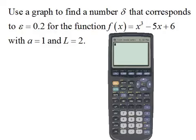Use a graph to find a number delta that corresponds to epsilon equals 0.2 for the function f of x equals x cubed minus 5x plus 6 with a equal 1 and L equal 2.